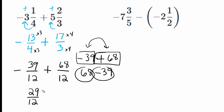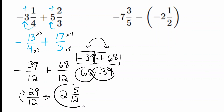So our numerator is 29. We take 29 over 12 and convert it back into a mixed number. How many 12s divide into 29? That's two groups of 12, which is 24. And 24 is five away from 29, so that is our numerator. The denominator stays the same. The answer is 2 and 5 twelfths.